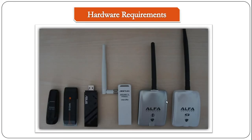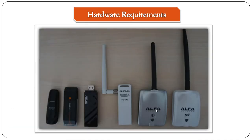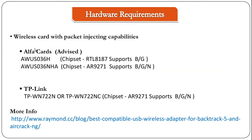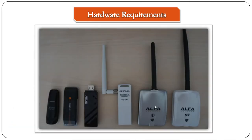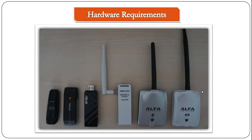I have taken a screenshot from his blog to give you an idea of how these cards look. The one on the extreme right is the latest Alpha AWUS036NHA which supports the B/G/N bands and has an Atheros chipset. The next one is the Alpha AWUS036H which has the RTL8187 chipset — the most used one for wireless hacking and pretty stable. The one in the center is the TP-Link WN722N, which has an Atheros chipset and also supports B/G/N. You can check his blog for more details.